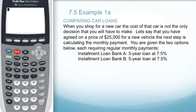Let's look at example 1 using the TVM solver. When you shop for a new car, the cost of the car is not the only decision you will have to make. Let's say you agree to a price of $25,000 for a new vehicle. The next step is calculating the monthly payment. You are given two options.